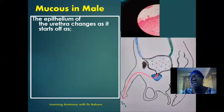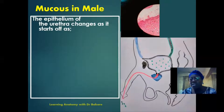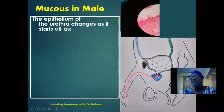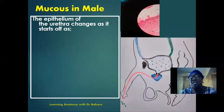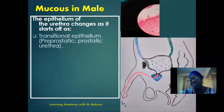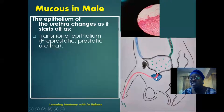The mucosal lining in both male and female are different due to the specification of the urethra in each. For the male, there is a transformation of epithelium lining from one region to the other. As described in our lecture on the urethra, the urethra is divided into regions lined by different epithelium. For the initial segment — the pre-prostatic urethra and the prostatic urethra — these two regions are lined by a transitional type of epithelium.